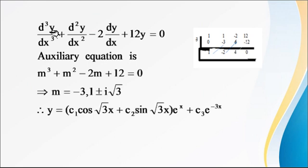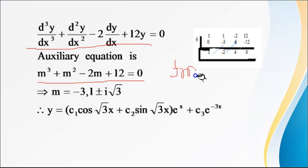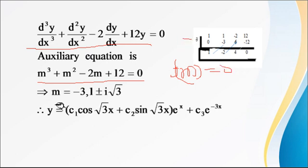Example 2: Solve d³y/dx³ + d²y/dx² − 2dy/dx + 12y = 0. The auxiliary equation is m³ + m² − 2m + 12 = 0. We use the synthetic division method. We check values: substituting m = −3 gives (−27) + 9 + 6 + 12 = 0. So m = −3 is one root.